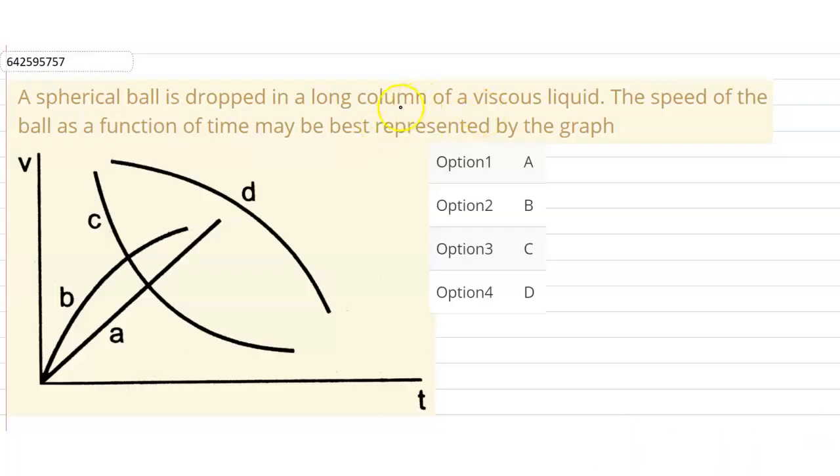When a spherical ball is dropped in a long column of viscous liquid, the speed of the ball as a function of time may be best represented by the graph. We have been given velocity-time graphs where several graphs are plotted. We have to say which one is best representing the situation.